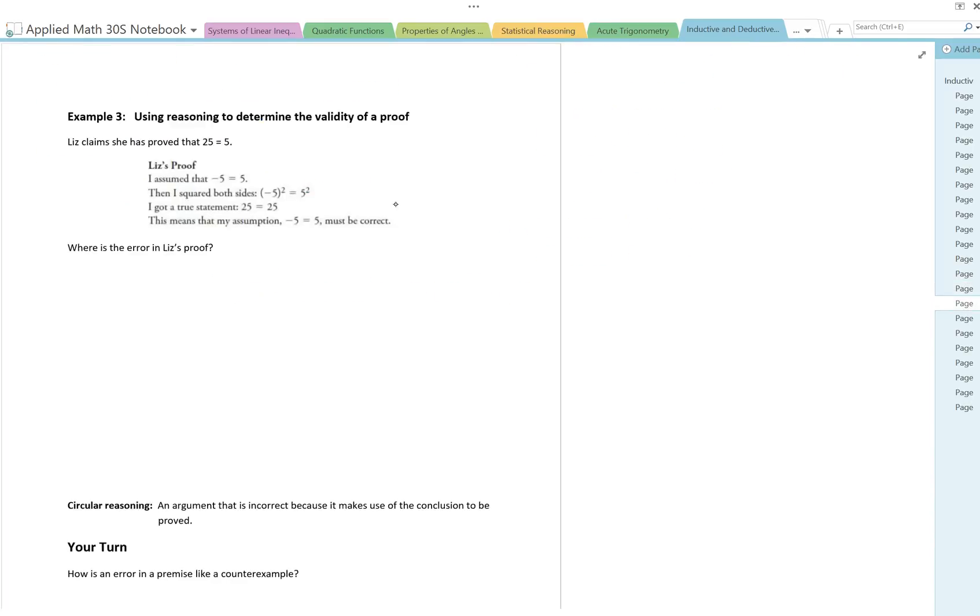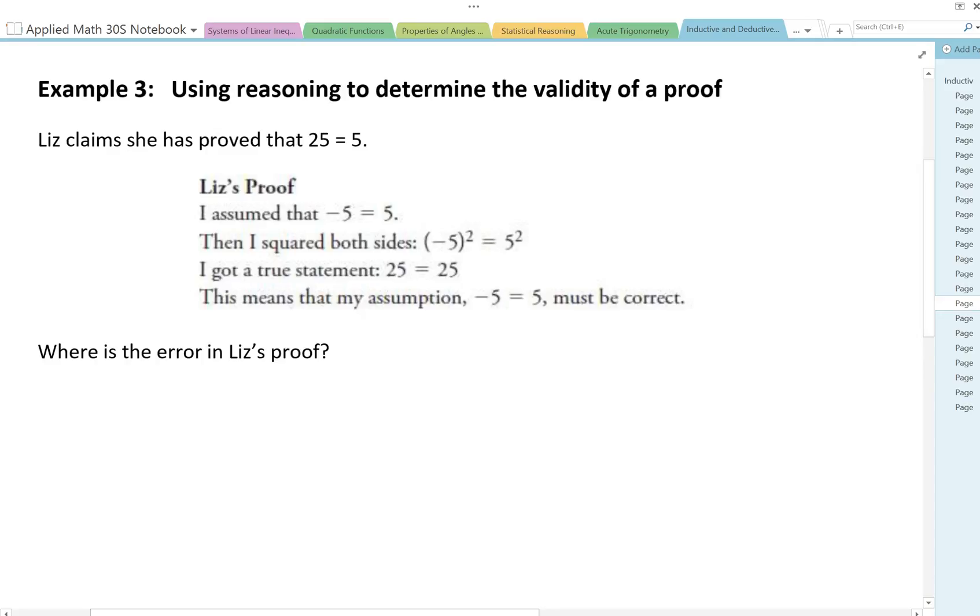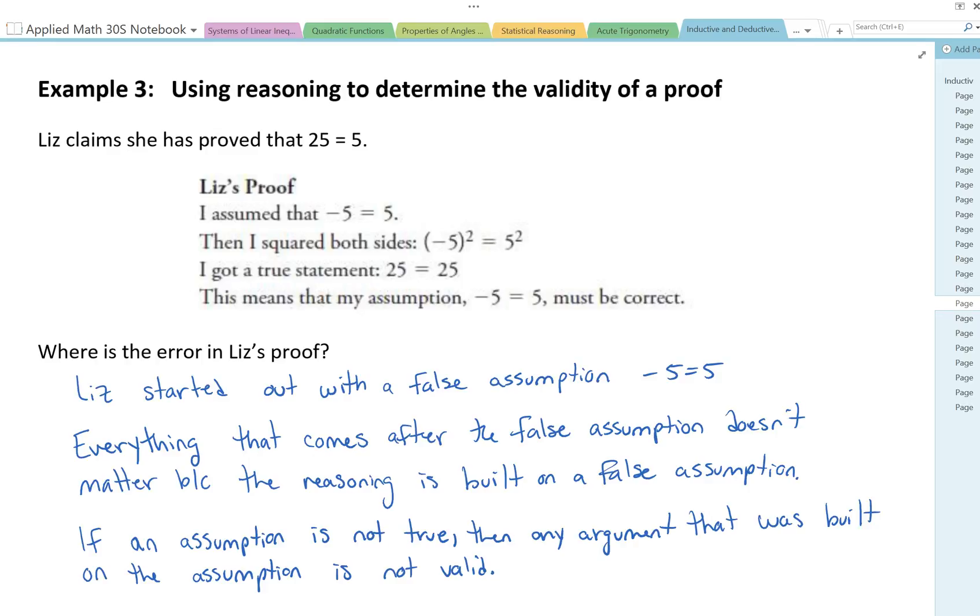Let's take a look at the next example. Example 3, using reasoning to determine the validity of a proof. Liz claims that she has proved that negative 5 is equal to 5. I assume that negative 5 equals 5. Then I squared both sides. I got a true statement. This means my assumption negative 5 equals 5 must be correct. But Liz started out with a false assumption. Negative 5 is not equal to 5. Everything that came after that is false because she used a false statement to start with.